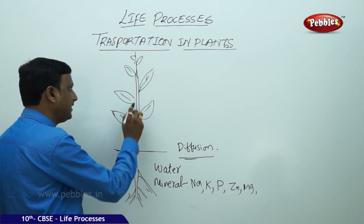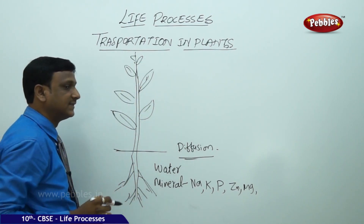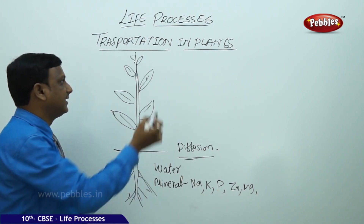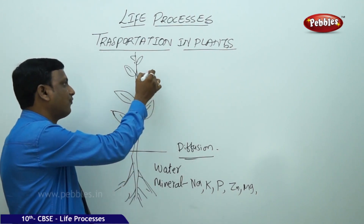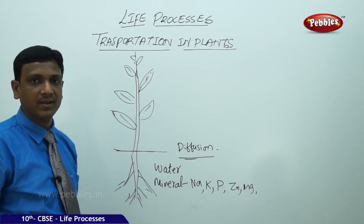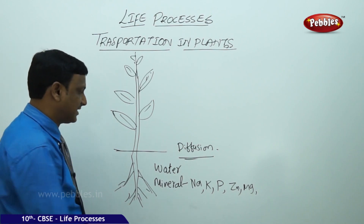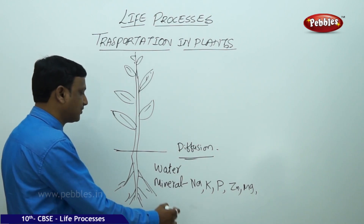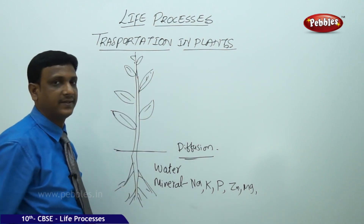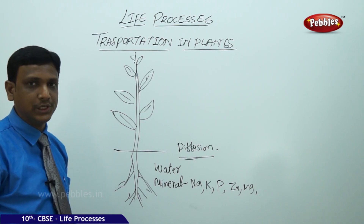The water needs to be transported to very long distances in the plant, because the leaf is the site of photosynthesis and water is required there, while water is available in the ground. So from the roots, the water has to be transported up to the leaves.